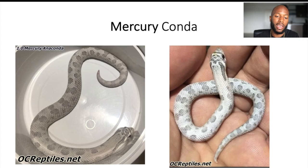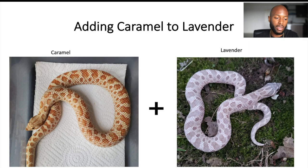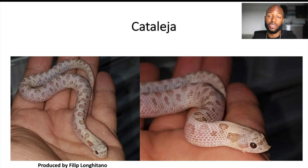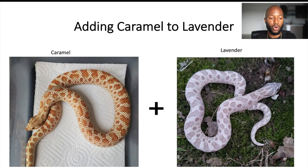Now let's get to the caramel mixed with the lavender. This combination is actually new — it was just announced as a world's first, maybe a month ago, early July, I saw it on Facebook. The breeder named this new morph combination after his daughter. As you can see, it does show a combination of the caramel gene and the lavender gene — it's almost like a perfect mixture. Looking back at the previous slide, you can see what a normal caramel and a normal lavender look like individually, and then when you combine them you get this pretty snake.